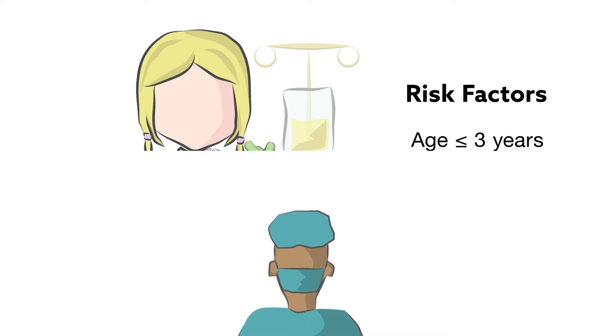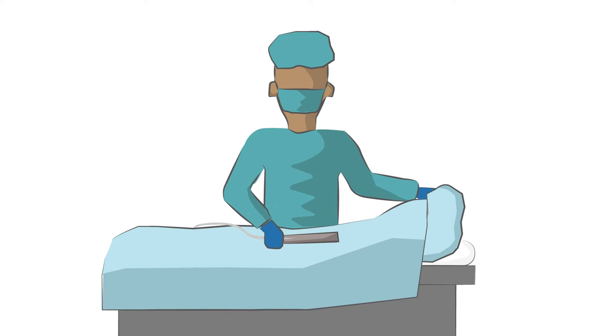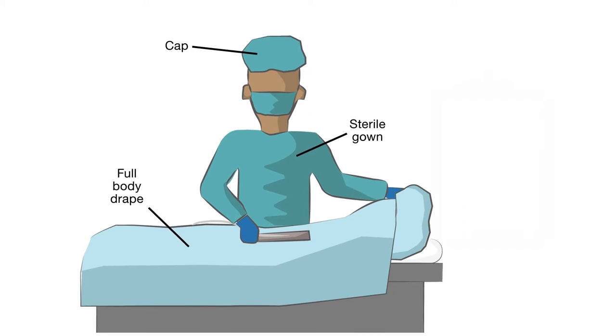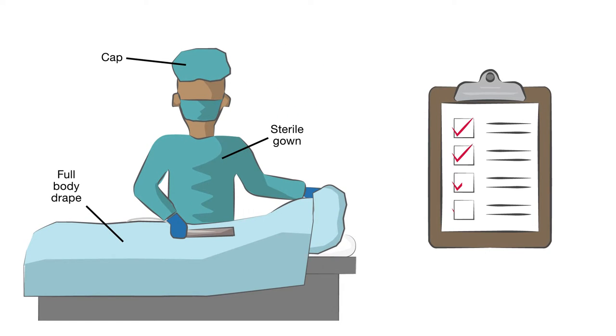There are ways to reduce the risk of infection. During catheter insertion, doctors and nurses should make every effort to prevent contamination, including the use of a sterile gown, cap, and full body drape. A checklist should be used to make sure these precautions are followed.